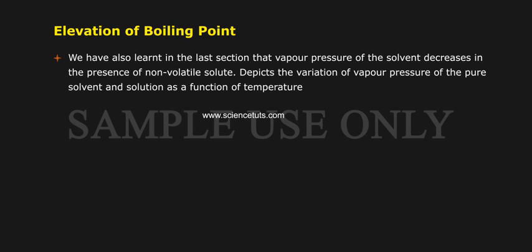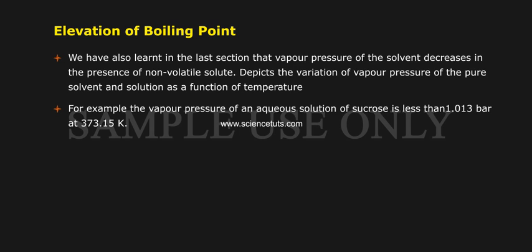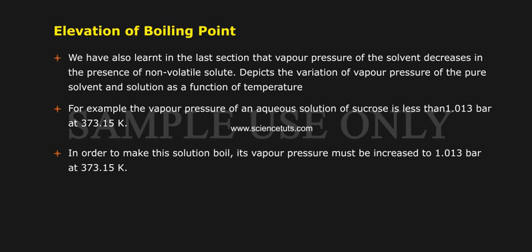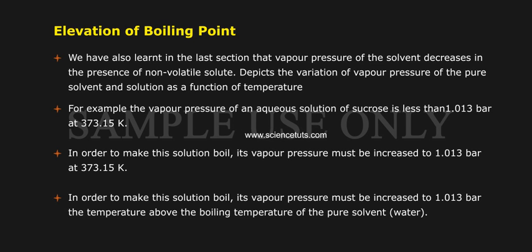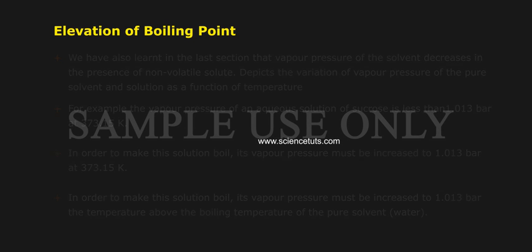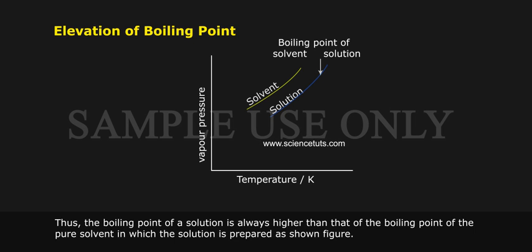We have also learnt that the vapour pressure of the solvent decreases in the presence of a non-volatile solute. This depicts the variation of vapour pressure of the pure solvent and solution as a function of temperature. For example, the vapour pressure of an aqueous solution of sucrose is less than 1.013 bar at 373.15 Kelvin. In order to make this solution boil, its vapour pressure must be increased to 1.013 bar, requiring a temperature above the boiling point of the pure solvent, water. Thus, the boiling point of a solution is always higher than that of the pure solvent in which the solution is prepared, as shown in the figure.